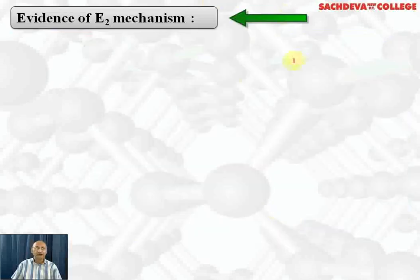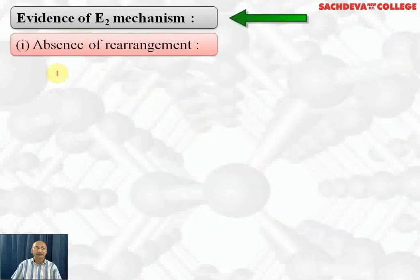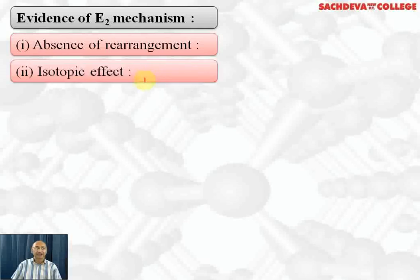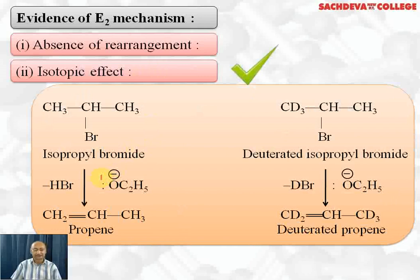Evidence for E2 mechanism: first, absence of rearrangement. No rearrangement takes place in E2 mechanism, which means it does not involve a carbocation. It involves both the alkyl halide and nucleophile in the same step, which is why the rate of reaction depends on the concentration of both the nucleophile and the alkyl halide. Next, we consider the isotopic effect.